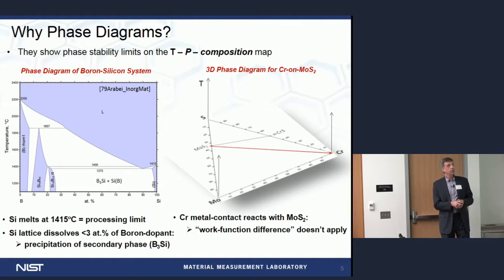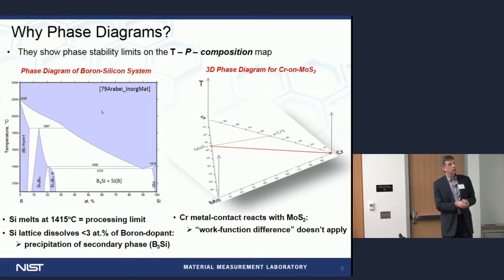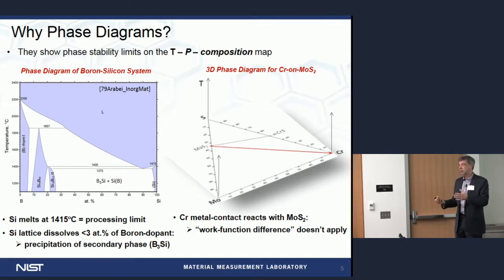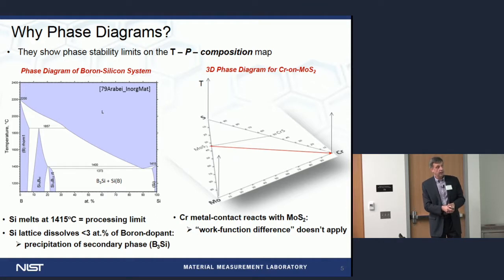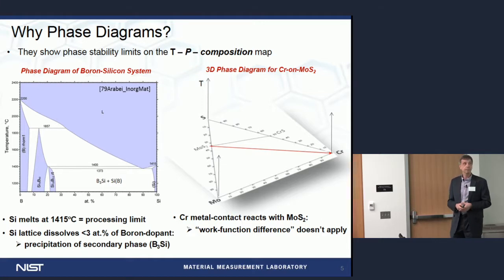The diagram on the right is a three-component system — for example, chrome, molybdenum, and sulfur for a metal contact on a 2D material. The composition line becomes a triangle, temperature goes up, making it a 3D image you can slice at different temperatures. Adding pressure makes it four-dimensional. The key point is that the diagram explains what happens when you put a metal on top of a 2D material in terms of reactivity, and proves that the simple work-function-difference approach does not apply if there is a reaction in the system.